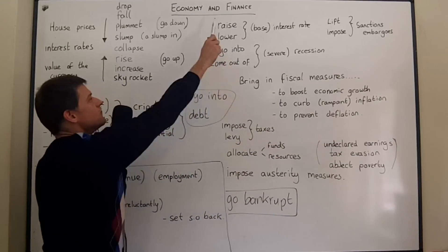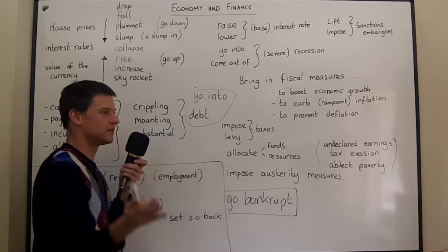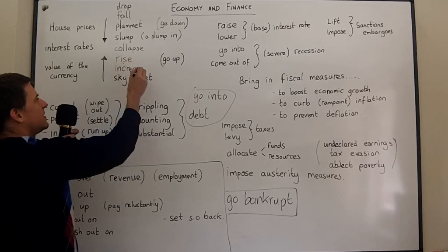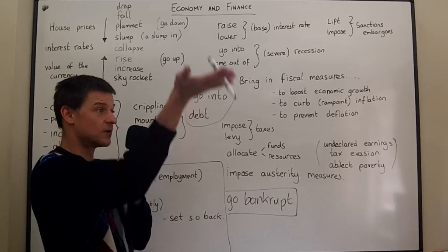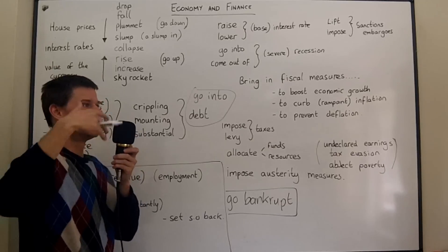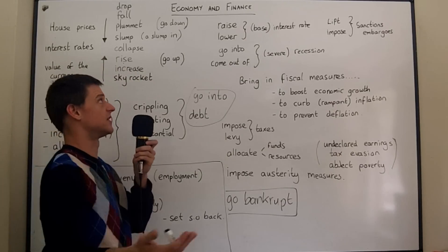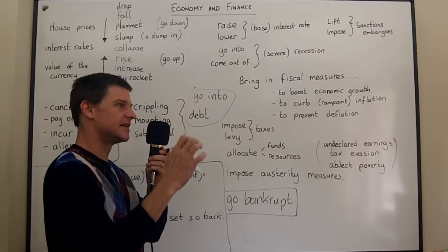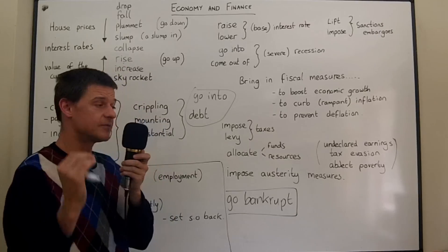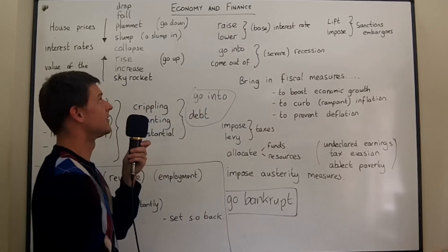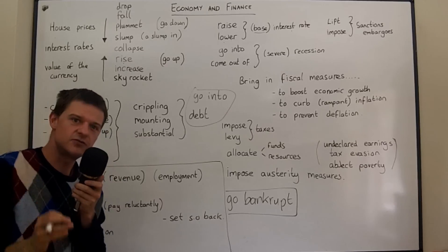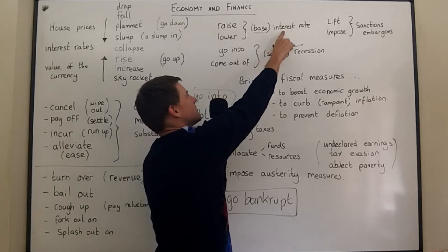You can raise interest rates or lower interest rates — put them up or put them down. Remember, raise is different from rise. Rise is when something moves on its own: the sea level is rising. Raise is when there's an agent involved — for example, your boss raises your salary, meaning your salary rises. But he could also lower your salary, and you can lower interest rates. The base interest rate is the central bank interest rate, and it's very important in economics. If the central bank sets the base interest rate very low, money is very cheap and easy to borrow, so a lot of money has to be printed.